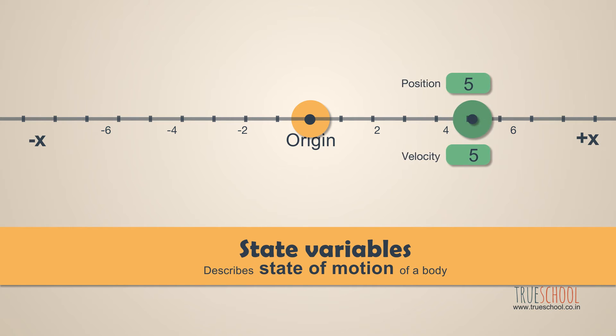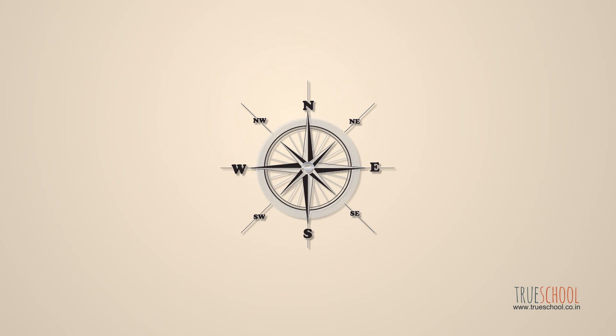Position becomes the distance of a body from the origin. All positions in the right direction are considered positive, and the left direction is considered negative. Why is the idea of direction important in considering position?